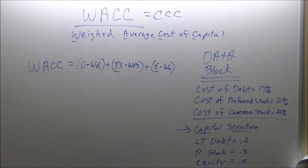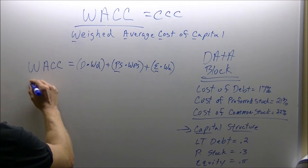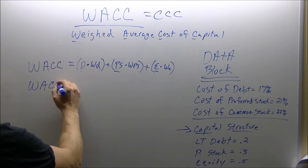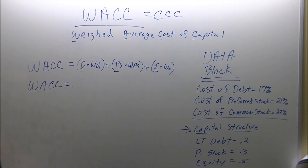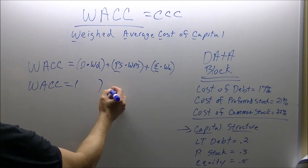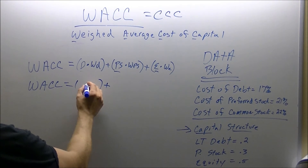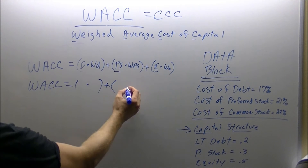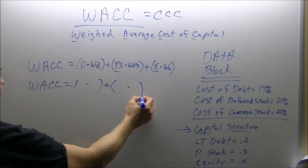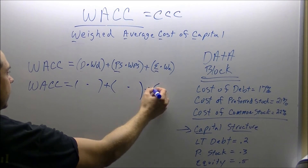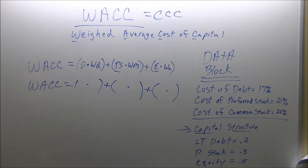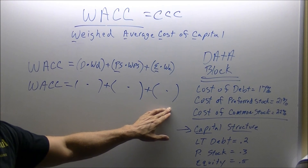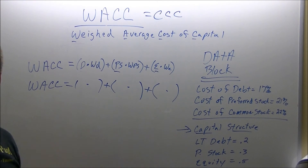The first step in order to calculate our WACC is to do what we call the simple stuff. We start with putting our WACC, put our equal sign, then we open up our parenthesis, close it, put our addition sign, put our multiplication sign, open up a parenthesis, put our multiplication sign, close the parenthesis, put our addition, open up parenthesis, put our multiplication sign, close the parenthesis. This is the structure we are going to use, and the only thing we now need to do is plug in our numbers.